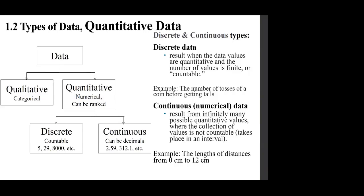Quantitative data is either discrete or continuous. You can't say you have 2.1 cars, but you can say every household in the United States has 2.1 cars on average — we can say it statistically but not individually.